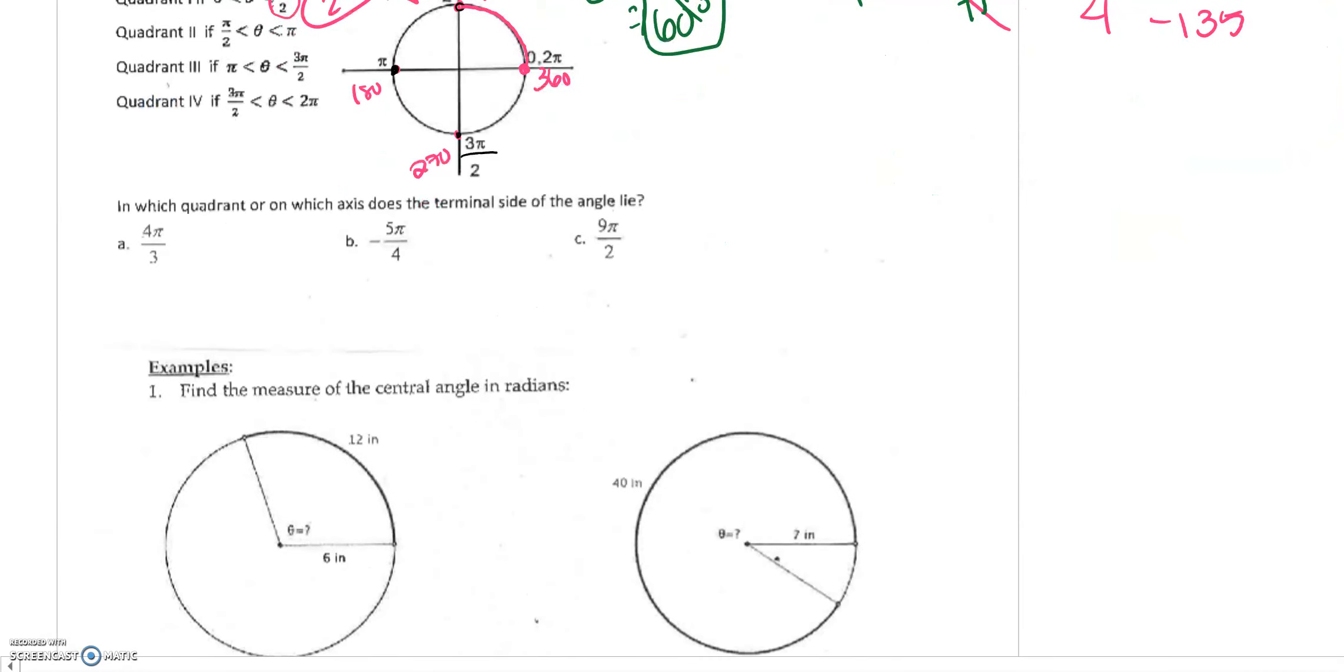In which quadrant or on which axis is the terminal side of the angle lie? So to me, the easiest way to do these is to convert them into degrees. So I'm going to multiply this by 180 over π. I'm going to cross simplify my π's. 4 times 180 over 3 is 240. And you might remember from last year, this is when you started to do all those little swirly things. So 240. Well, this is 90, 180. You don't want to hit 270. You can just estimate that it's about here. What quadrant is it in? Well, here's 1, 2, 3. So it's in the third quadrant.